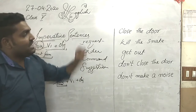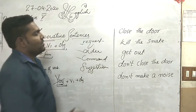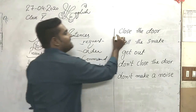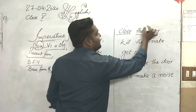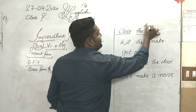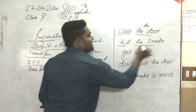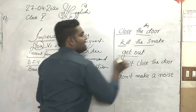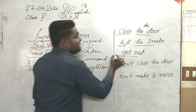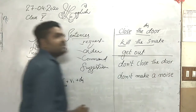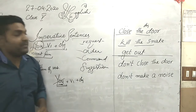I have written some examples. Let's see: 'Close the door' — this is the first form of verb with the object. Second: 'Kill the snake.' Third: 'Get out.' These are three positive statements of imperative sentences.